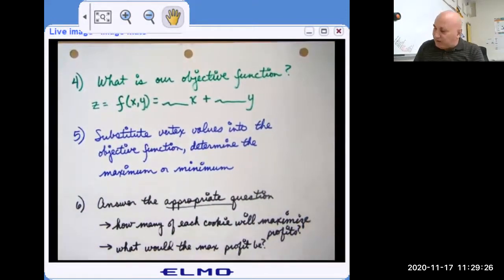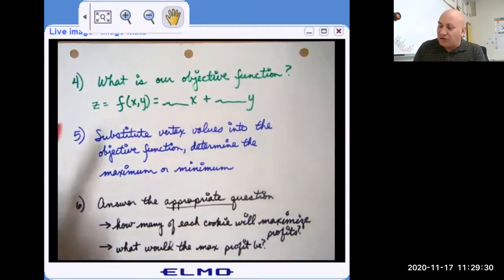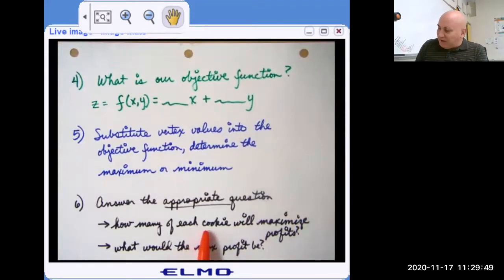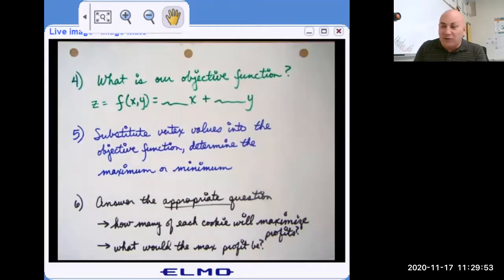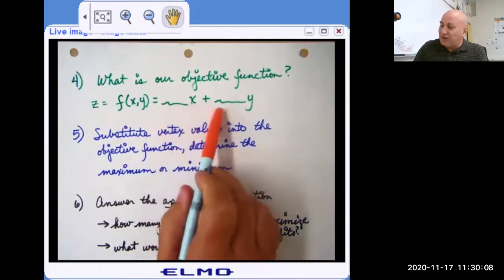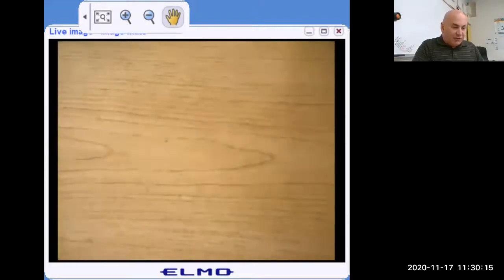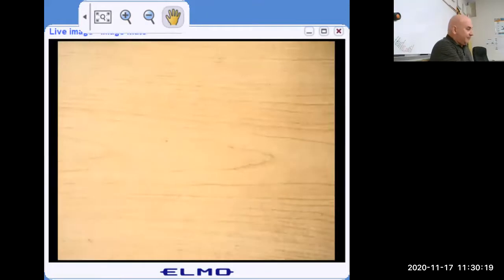And then we want to find the vertices of that convex polygonal region. And we want to substitute the X and Y values of those vertices into this objective function. In our example, perhaps that objective function had to do with profit. Perhaps it had to do with cost, minimizing cost, maximizing profit. And then the key thing is you want to answer the appropriate question. If I ask how many of each cookie will maximize profits, then I'm asking you, what is the value of X and what is the value of Y that will maximize profits? Maybe I don't care how many of each, maybe I just want to know what would that maximum profit be? In other words, after you take that X and Y values substituted into here, what is that maximum profit?